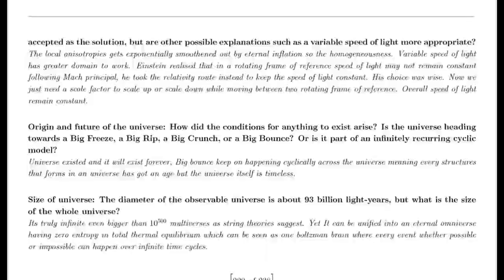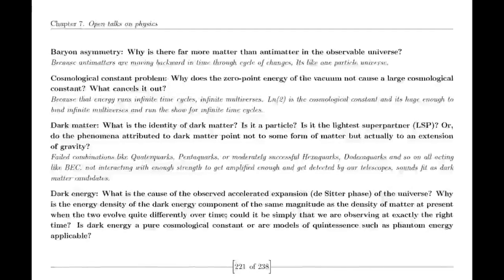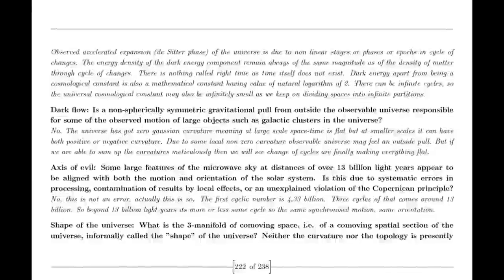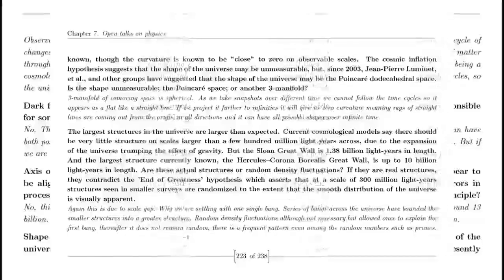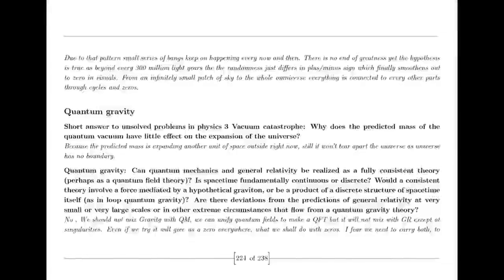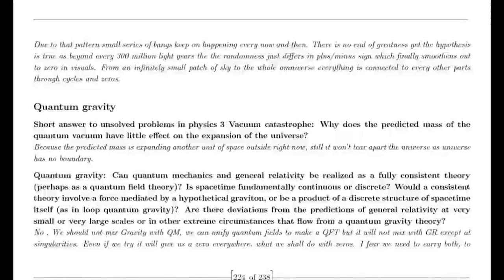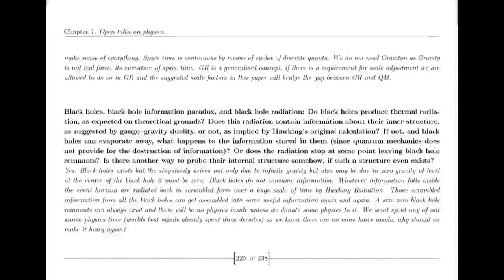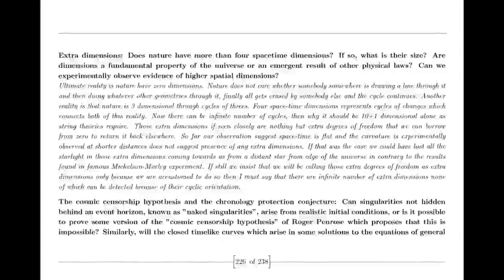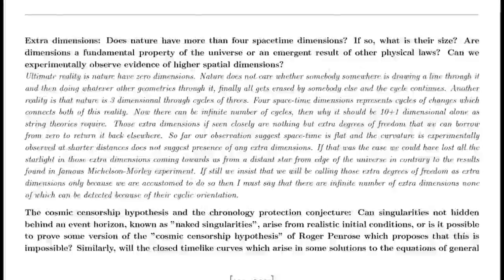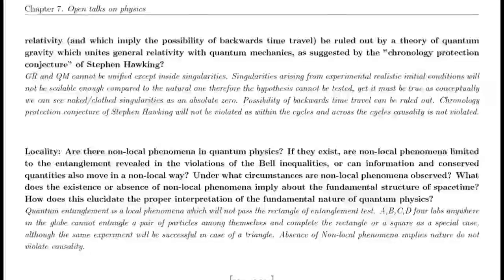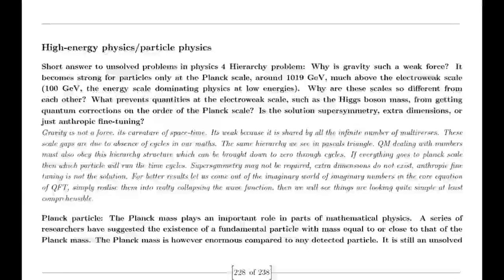Gödel's incompleteness theorem states that in any consistent axiomatic system capable of expressing basic arithmetic, there are true statements that cannot be proven within that system. This implies that no matter how many axioms we add to our mathematical framework, there will always be some truths that elude formal proof. However, this does not mean our mathematical efforts are futile — adding new axioms can significantly enrich mathematics, allowing us to explore more complex structures and phenomena.